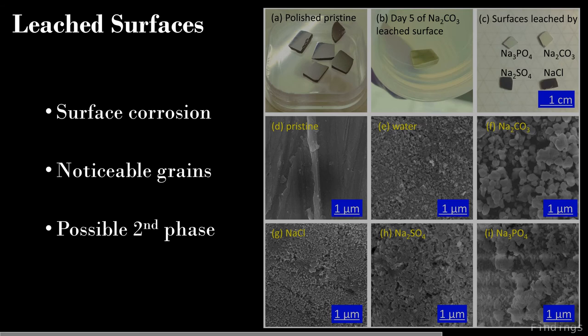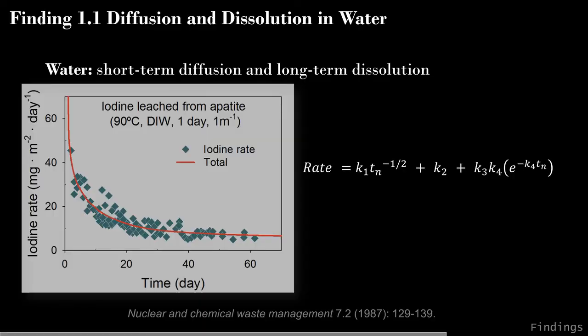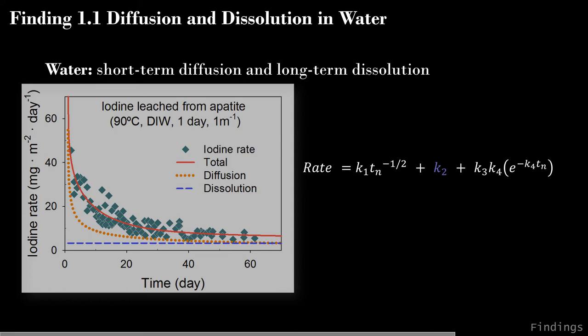The leached surfaces are highly corroded, with some exhibiting noticeable grain growth and possible secondary phase formation. In deionized water, iodine release is controlled by short-term diffusion and long-term dissolution. The iodine release rates can be fitted with a semi-empirical equation showing that total released iodine is contributed by rapid diffusion, constant dissolution, and surface effects due to defects. Short-term diffusion gave a high initial release of iodine that gradually decreased to a flat line, indicating constant dissolution took control.